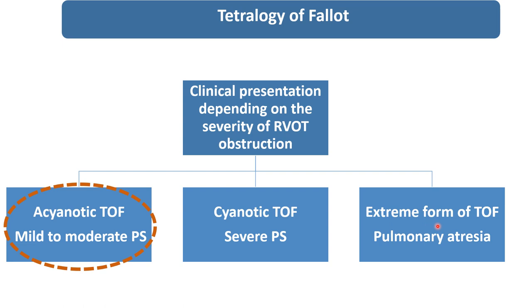The extreme form of TOF, because of pulmonary atresia, they will develop cyanosis right from birth. They will be symptomatic right from birth and they cannot survive without urgent operation.